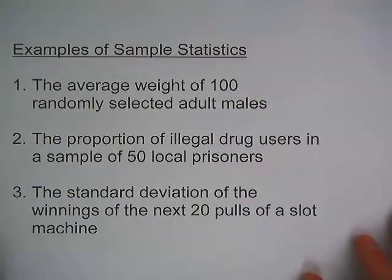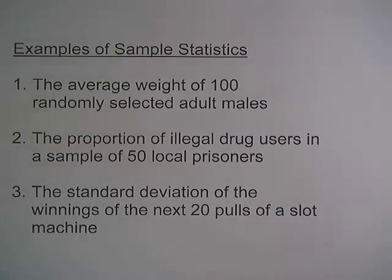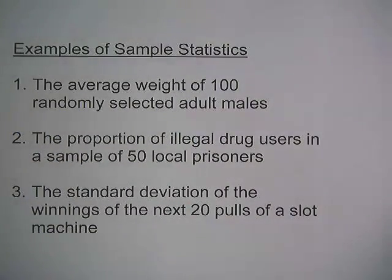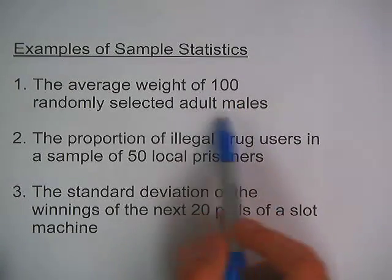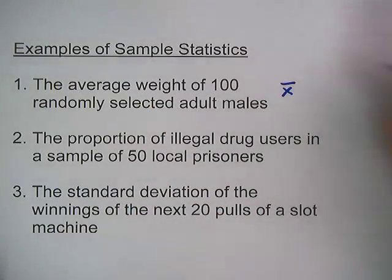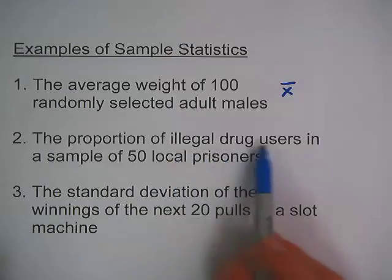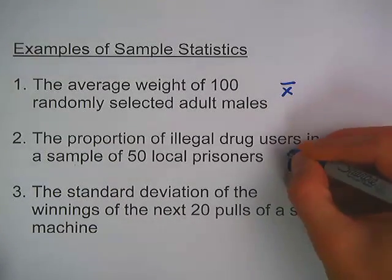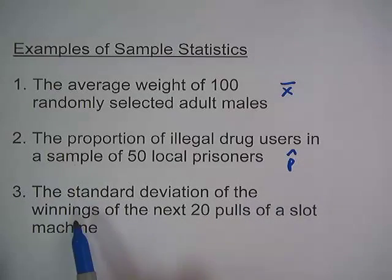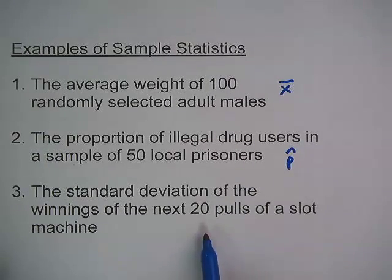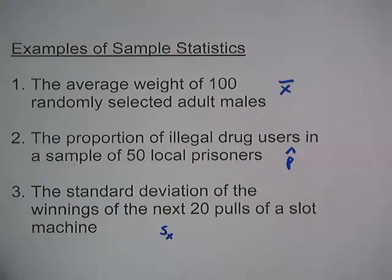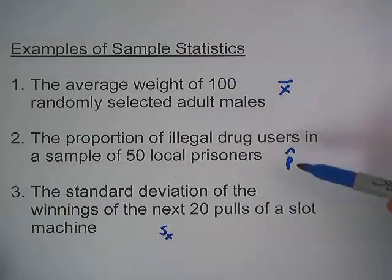Let's take a look at a couple of examples of sample statistics. Number one: the average weight of 100 randomly selected adult males. Since we're looking at a sample of 100 adult males and calculating the average weight, this would be x-bar. Number two: the proportion of illegal drug users in a sample of 50 local prisoners — this is a sample proportion, so we use p-hat. Number three: the standard deviation of the winnings of the next 20 pulls of a slot machine. Since we're only doing 20 pulls, not a full population of pulls, this is a sample standard deviation — symbol s sub x.